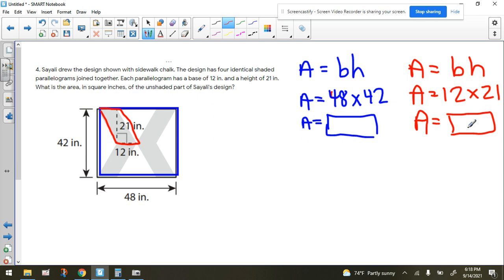Now keep in mind, we have one, two, three, four of those. You need to take whatever this number is and multiply it by four, and you're going to come up with a new number. Now that's going to be the area of the shaded region, right? That'll be the area of the shaded region, what you're going to put in this green box.